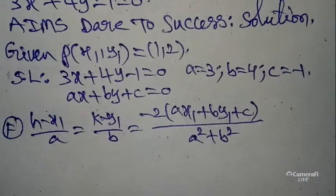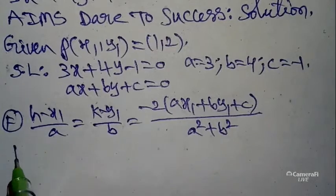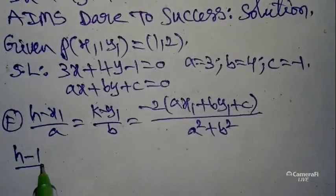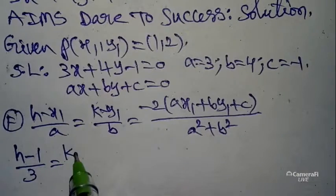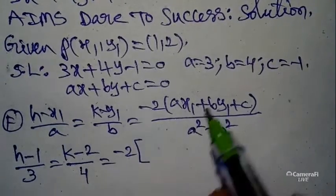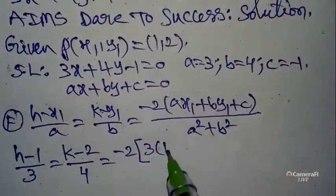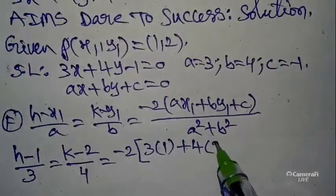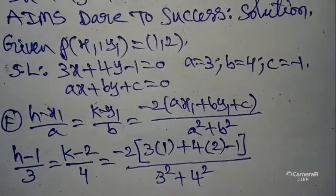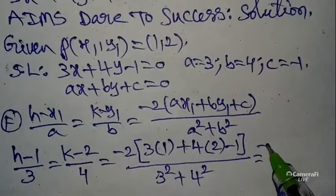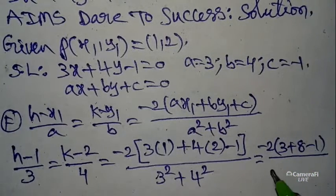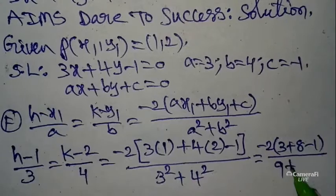According to our given values: (h - 1)/3 = (k - 2)/4 = -2[3(1) + 4(2) + (-1)]/(3² + 4²). This equals -2(3 + 8 - 1)/(9 + 16) = -2(10)/25.